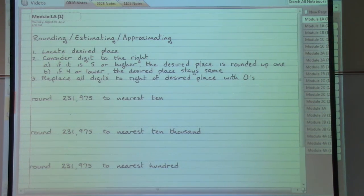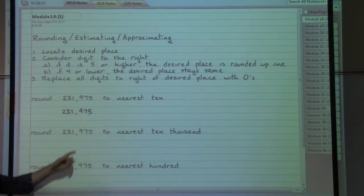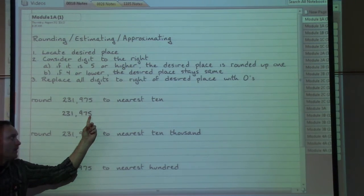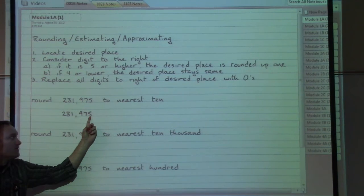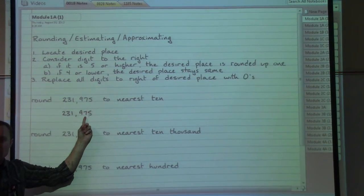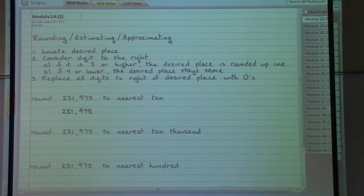In this first example, round 231,975 to the nearest ten. We're going to look at that whole number and start at the very end, which is the ones place, and then move forward until we find the desired place. In front of the five we have the seven, which is in the tens place, and we round to the nearest ten. So let's underline that in blue. That is our desired place.